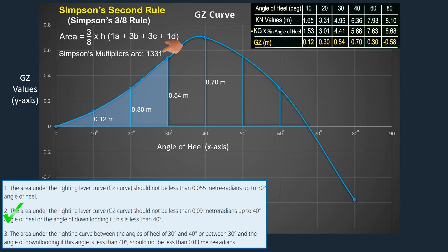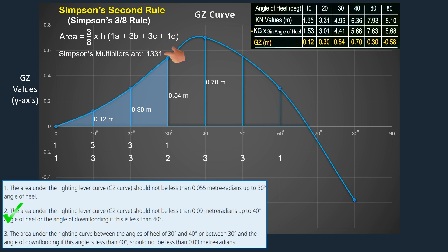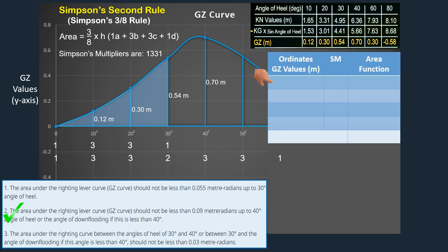The Simpson's multipliers for the second rule are 1, 3, 3, 1. With seven ordinates, the multipliers are 1, 3, 3, 2, 3, 3, 1. Using Simpson's Second Rule, we can calculate the area under the GZ curve up to 30 degrees and 60 degrees of heel. We will calculate the area up to 30 degrees, as required by intact stability criterion number one. The key difference between Simpson's first and second rules lies in their coefficients and multipliers, but the overall approach remains similar.